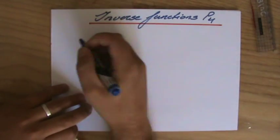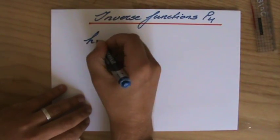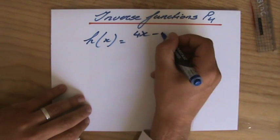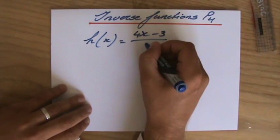All right, inverse functions. Let's say we have the function h(x) = (4x-3)/5.